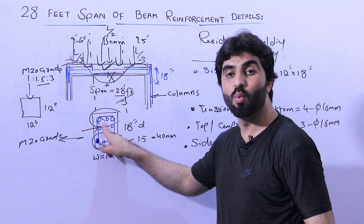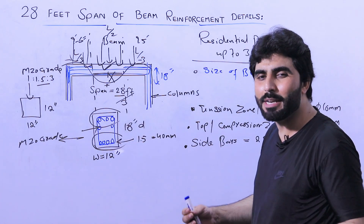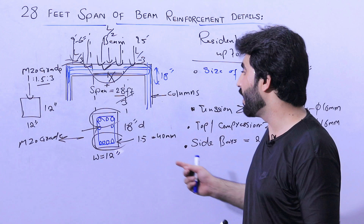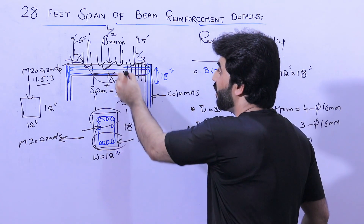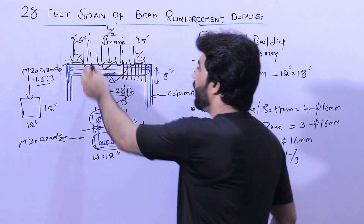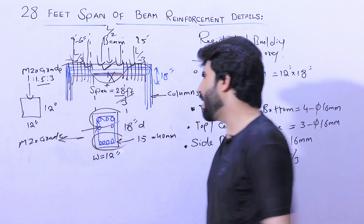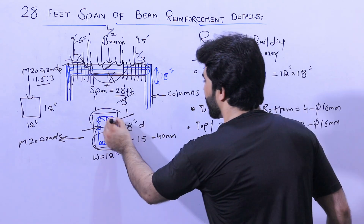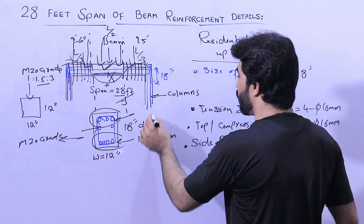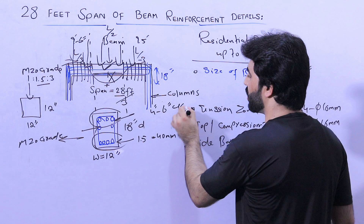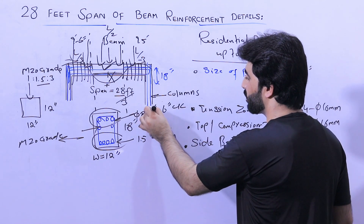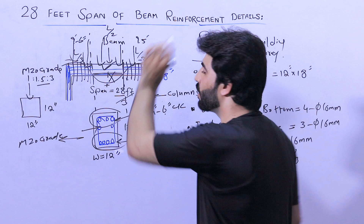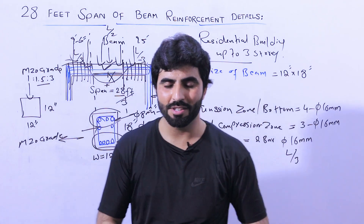The hooks are bent at 135 degrees — do not provide 90-degree hooks because bars can easily move apart. The spacing of stirrups should be closely placed at the distance of L by 4 where we have negative bending moment, on both left and right sides. At the middle — L by 2 — you can increase the spacing. Provide stirrups at 4 to 6 inches center to center, and the diameter should not be less than 8 mm. At L by 4, keep 6-inch spacing for good results.